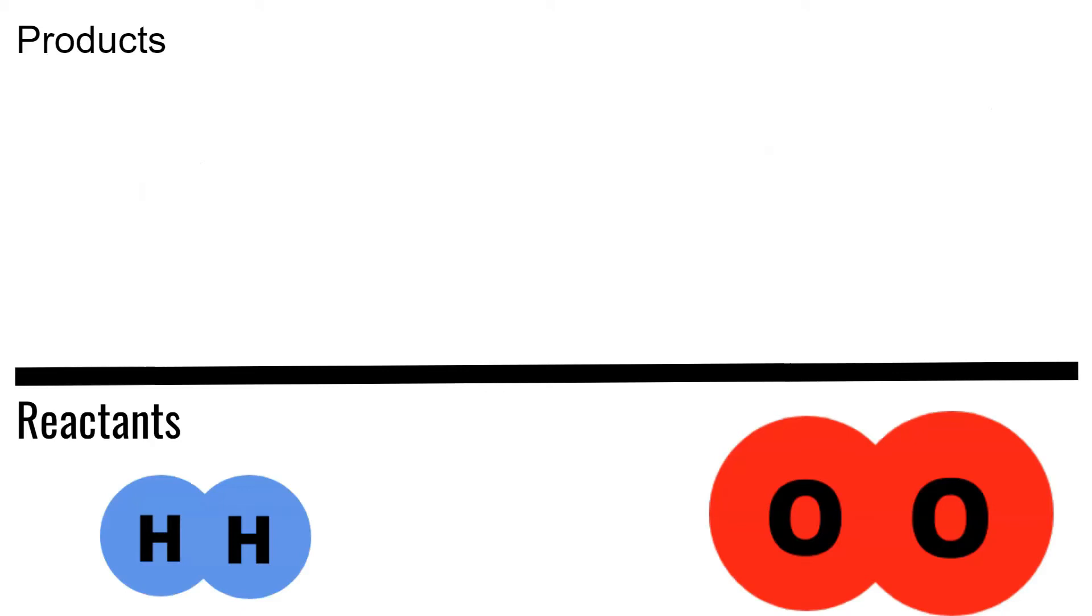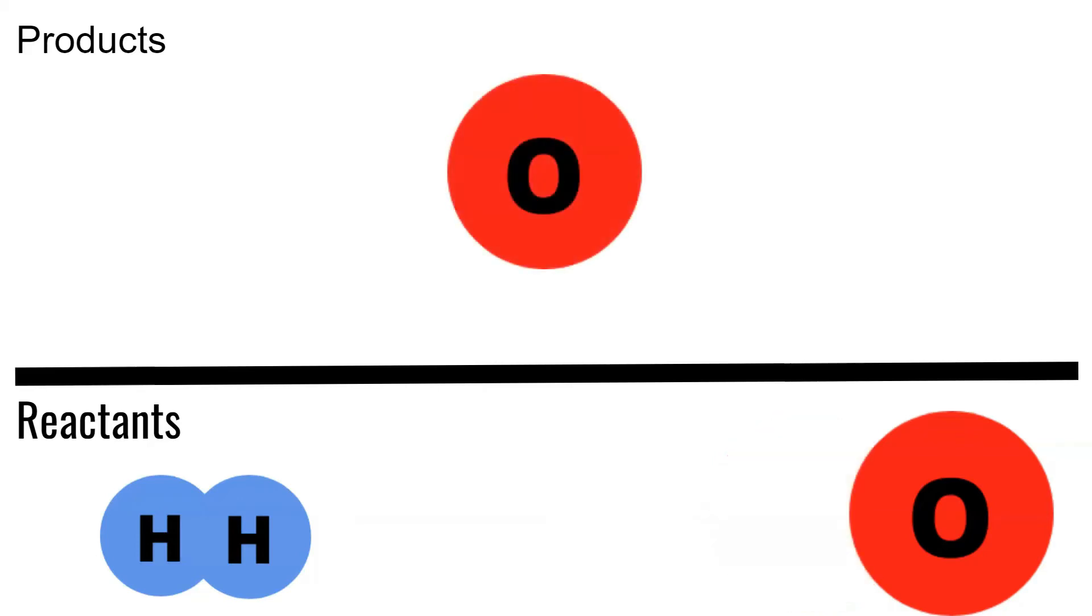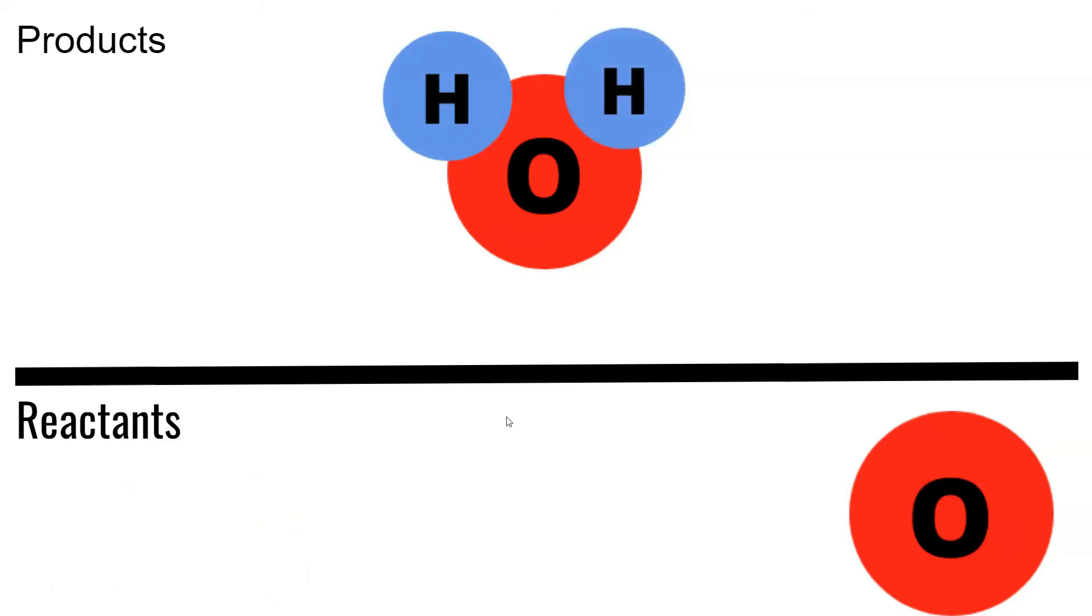So on the bottom here we have our reactants. We have one set of H2 and we have one set of O2. So what happens is we get oxygen and it combines, it forms a bond with the two hydrogens. Now you notice the oxygen right there? You can't have anything left over. So when you're looking at chemical reactions, everything needs to be accounted for. You can't have a lone atom of oxygen.